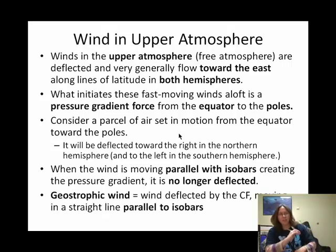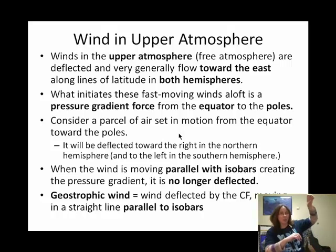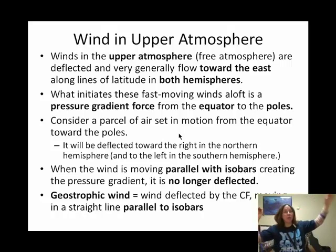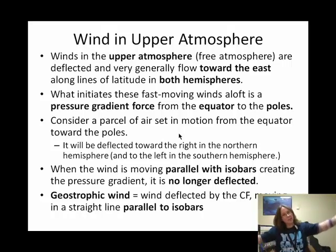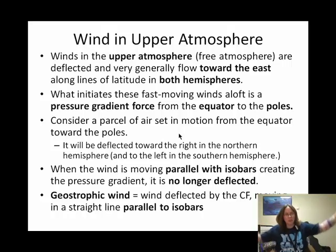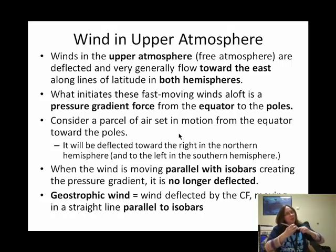So at upper elevations, because the equator is warmer, we have a relatively high pressure near the equator. And at both poles at upper elevations, the air has settled and it's dense down there, but up top it is relatively low pressure because we have a column of cold air there. So basically, we have a pressure gradient force.